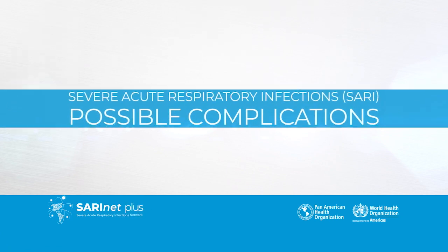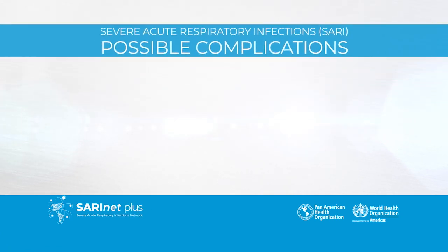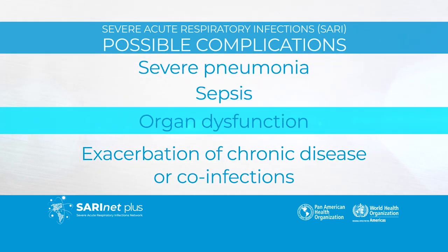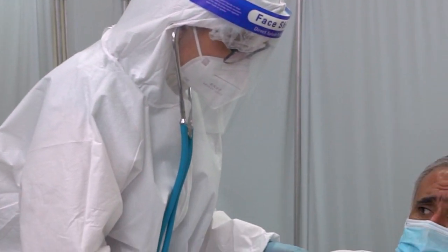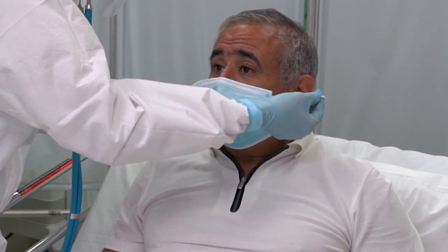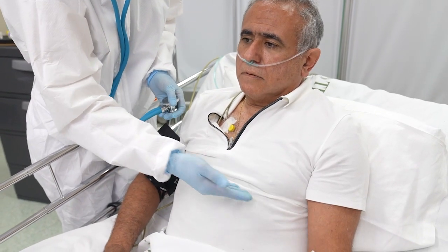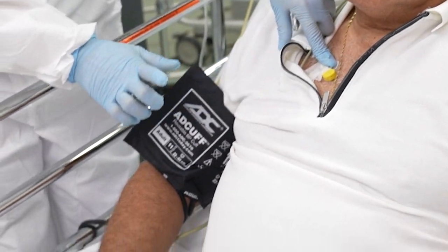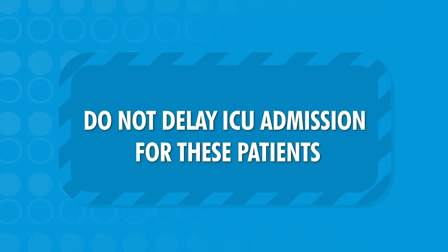Generally, patients with SARI need acute hospital care because of possible complications such as severe pneumonia, sepsis, organ dysfunction, and/or exacerbation of chronic disease or co-infections. These patients can progress to acute organ failure that may require critical care and admission to ICU for closer monitoring and supportive therapies that cannot be delivered on a general ward. Do not delay ICU admission for these patients.